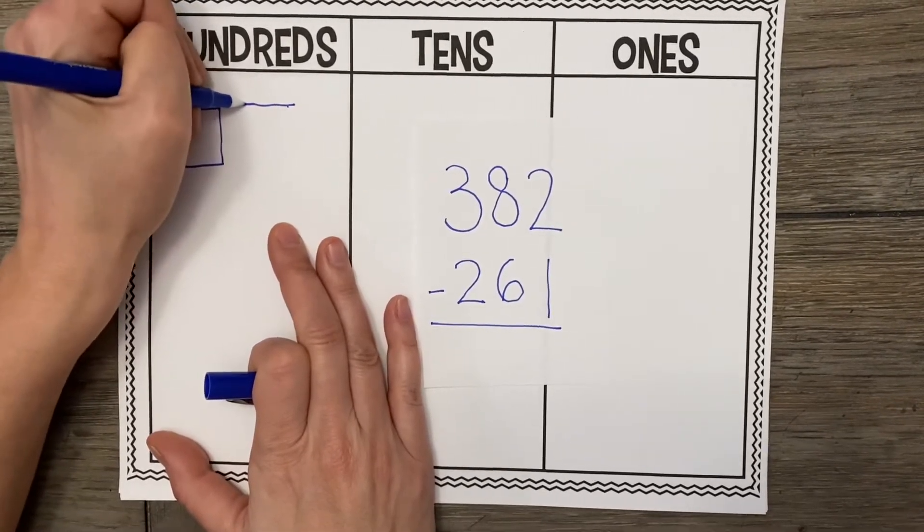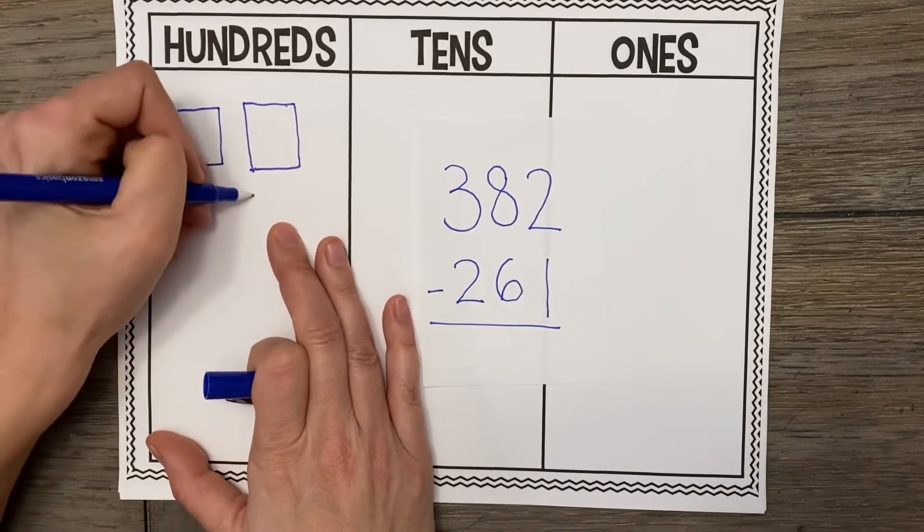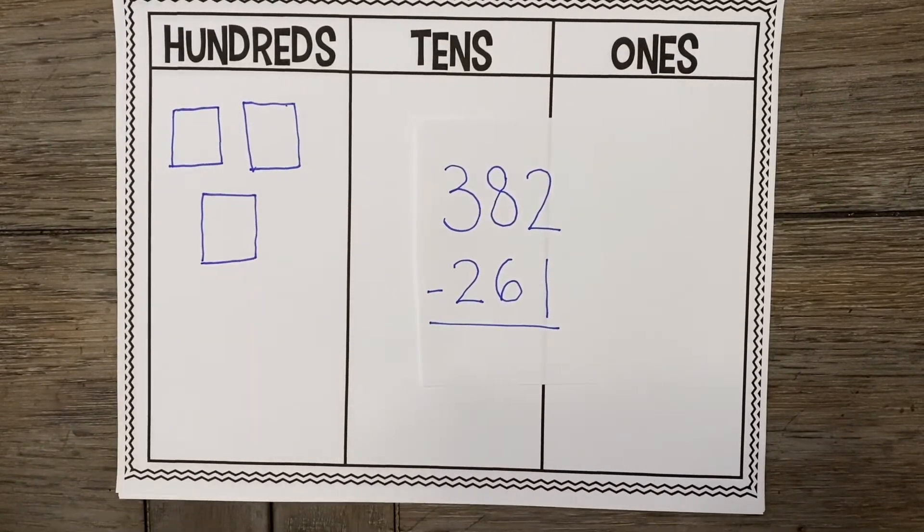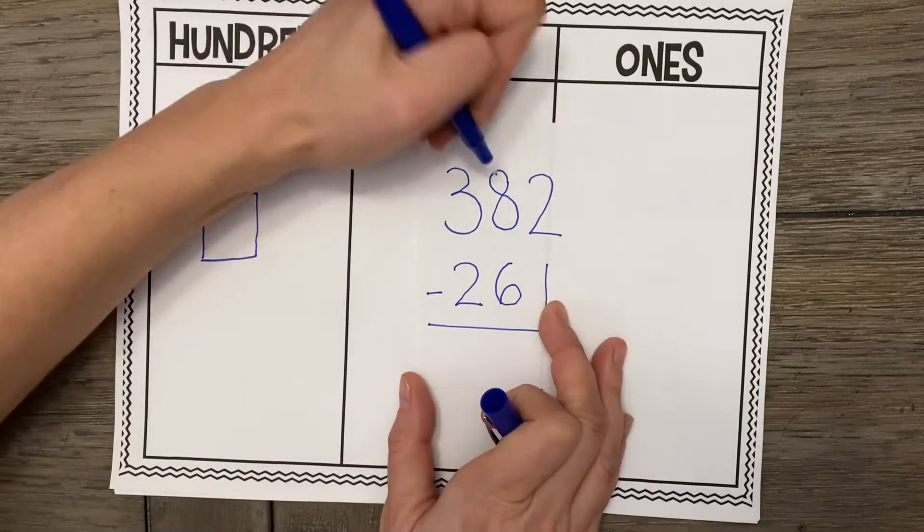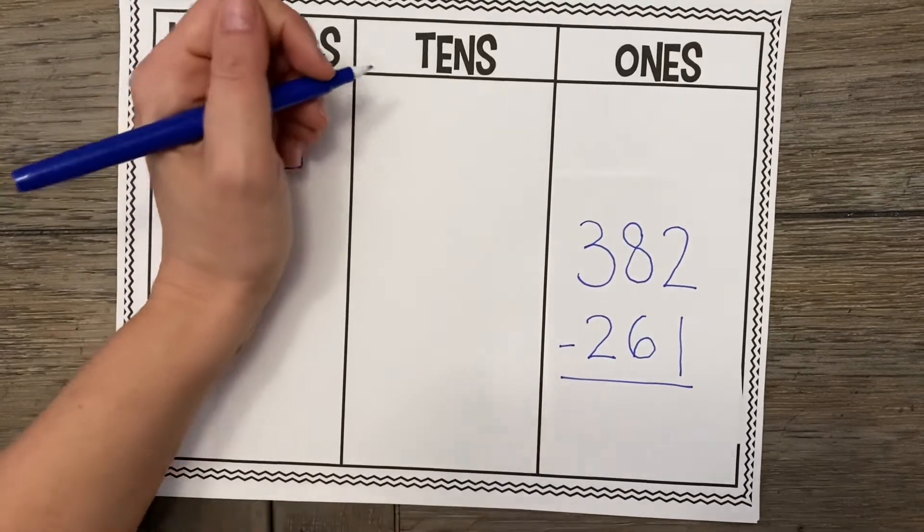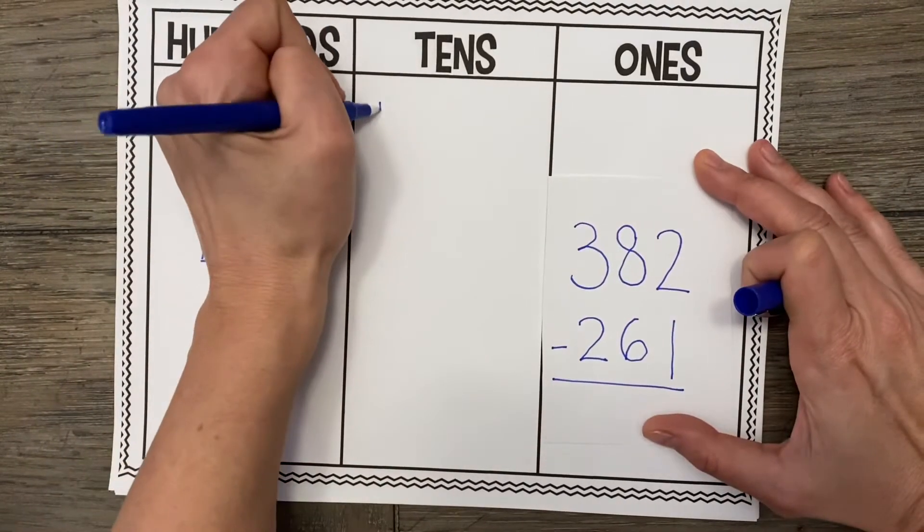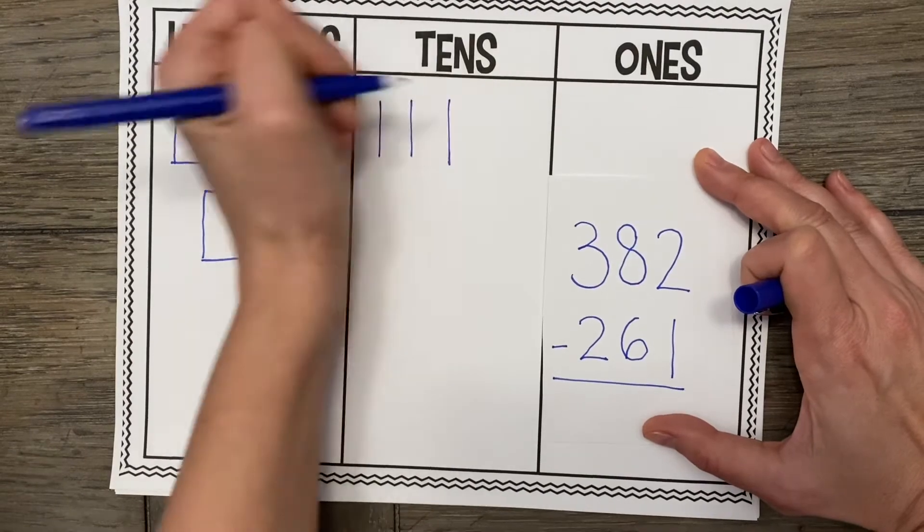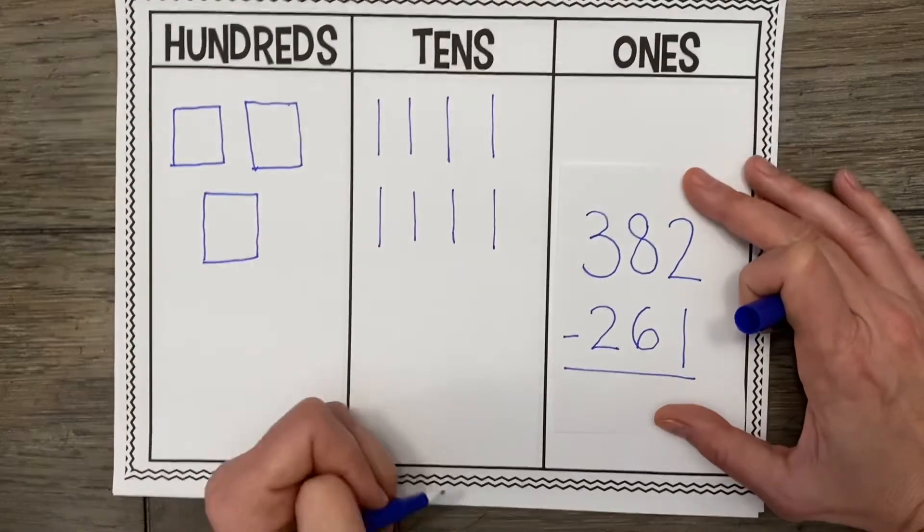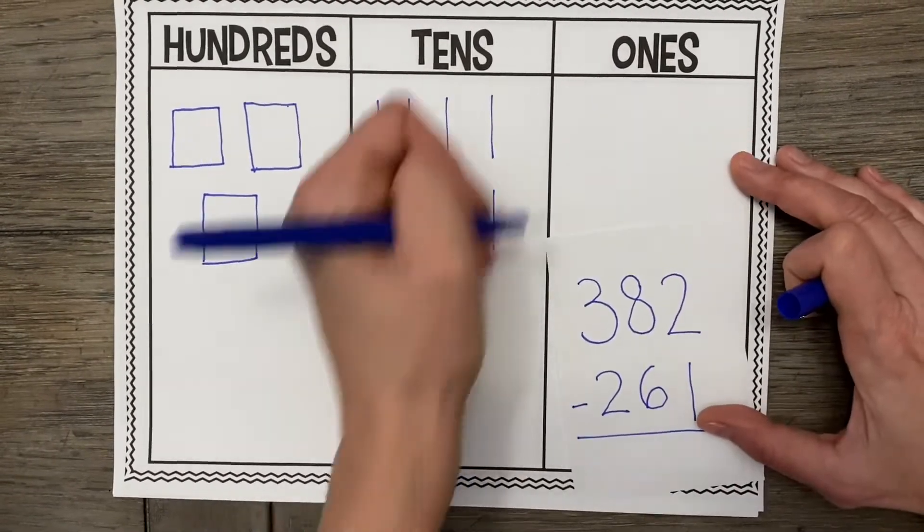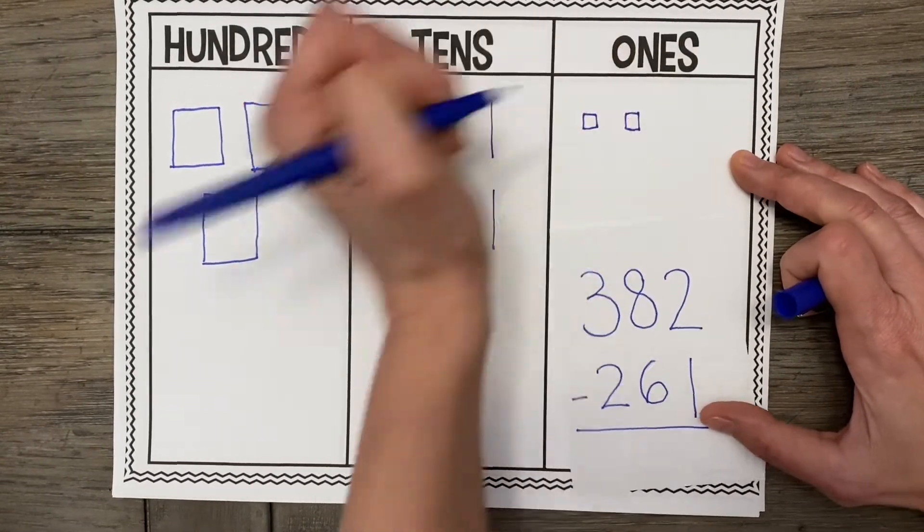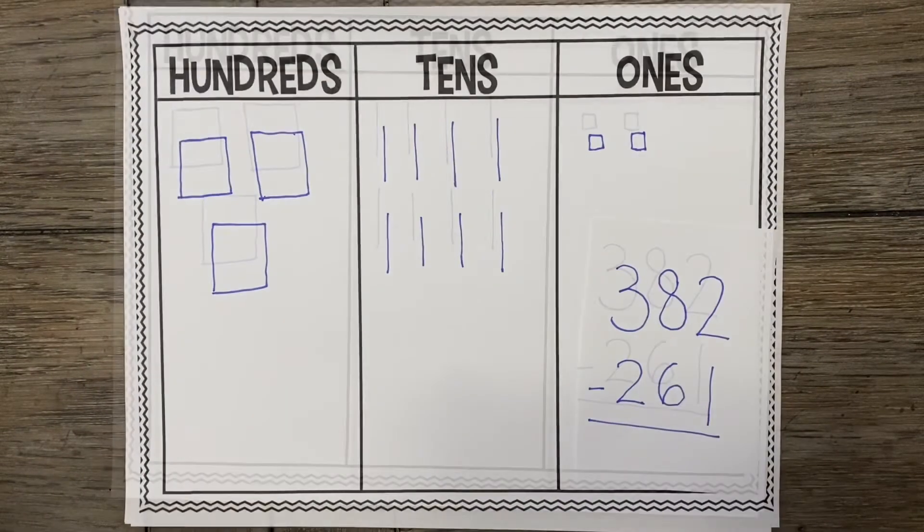1, 2, and 3. Alright, now I am going to draw my 8 tens. So once again, I can do this just using straight lines for my 10 rods. 1, 2, 3, 4, 5, 6, 7, 8. And now I'm going to draw my 2 ones. And I'm going to make little squares for these 1s. So just little squares so we can tell the difference between those and our 100s.